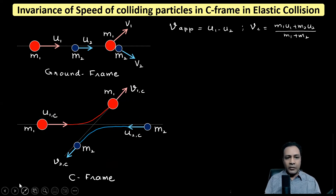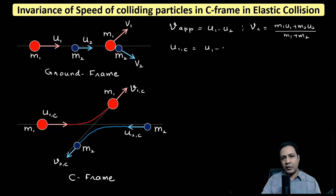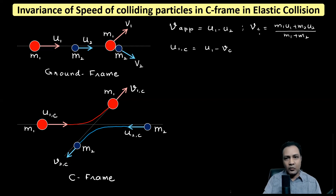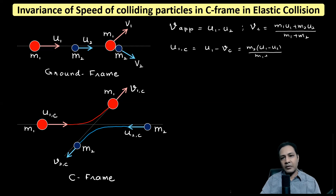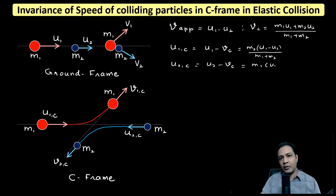The initial velocity of particle one in the C frame, u1c, equals u1 minus vc. Substituting, you obtain u1c = m2·(u1 − u2) / (m1 + m2). Similarly, the initial speed of particle two in the C frame is u2c = u2 minus vc, and its magnitude — the direction being opposite — works out to m1·(u1 − u2) / (m1 + m2), as you can see in the diagram.